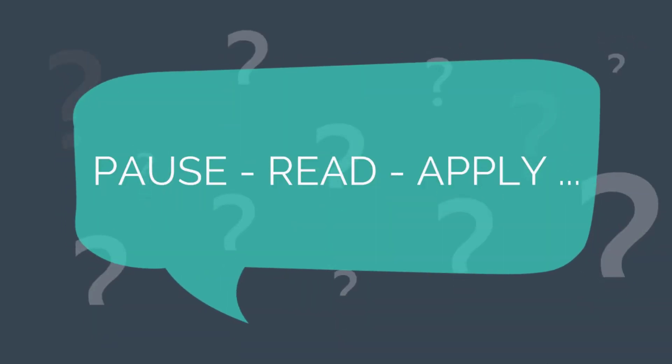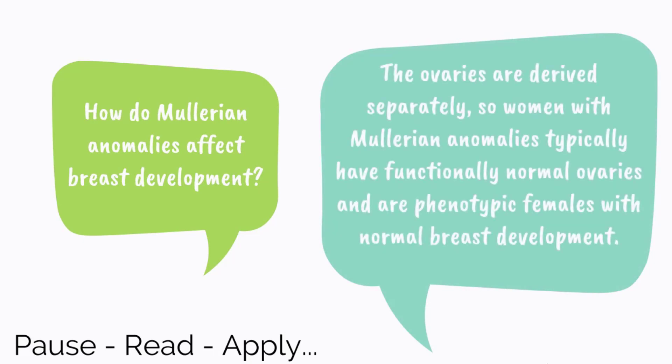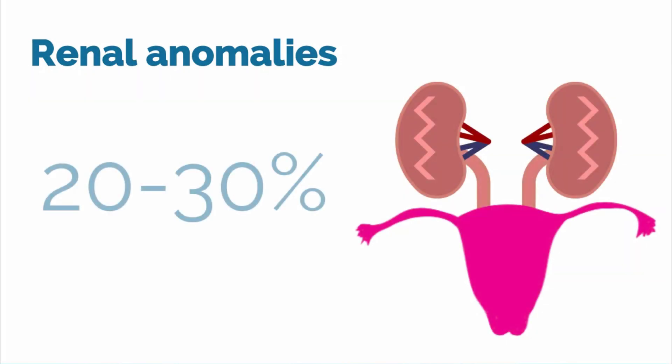Let's pause and apply: how do Müllerian anomalies affect breast development? It is important to remember that the ovaries are derived separately, so women with Müllerian anomalies typically have functionally normal ovaries and are phenotypic females with normal breast development. Alternatively, the renal system forms closely with the paramesonephric ducts, and as a result, renal anomalies are found in 20-30% of women with Müllerian defects. Once a Müllerian anomaly is confirmed, women must be evaluated for renal anomalies, which can be diagnosed with MRI, ultrasound, or intravenous pyelogram.